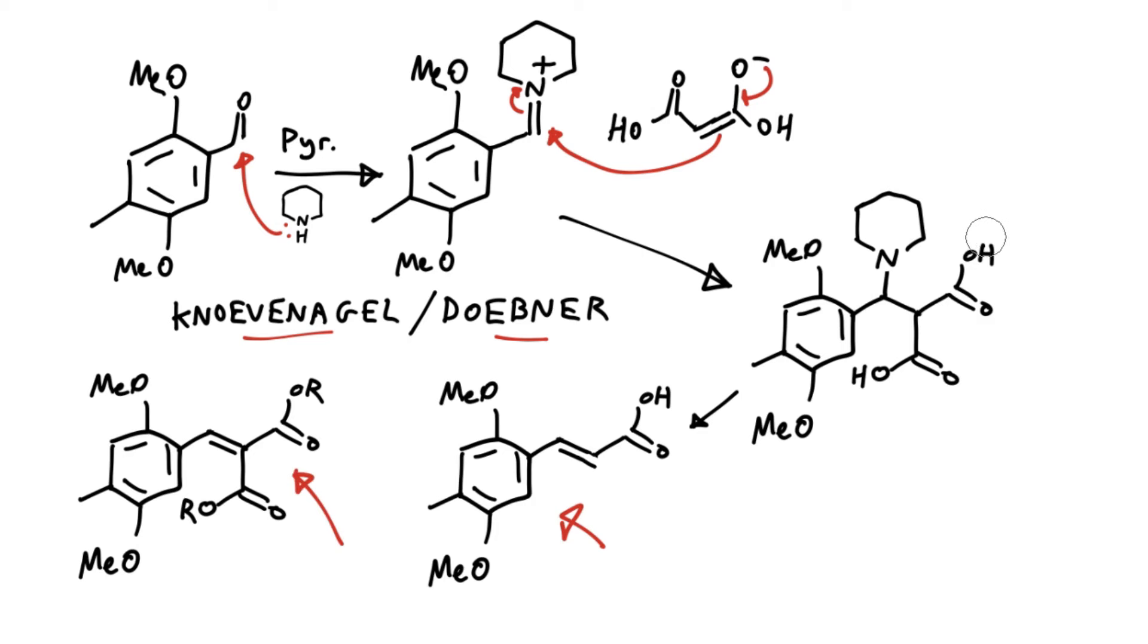But given that we're in Doebner conditions, and presumably a lot of this carboxylate groups are in a deprotonated form, you'll get a concerted loss of carboxylate, and this will probably be protonated as it leaves, and it'll take you straight to the cinnamic acid product here with only a single carboxylate group.